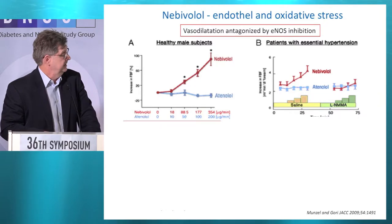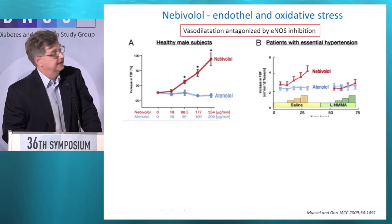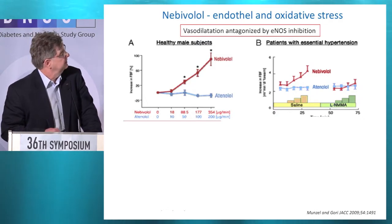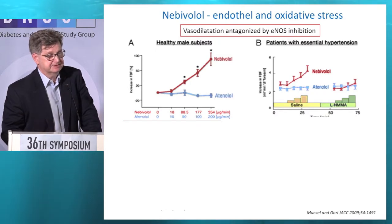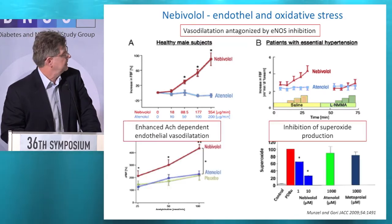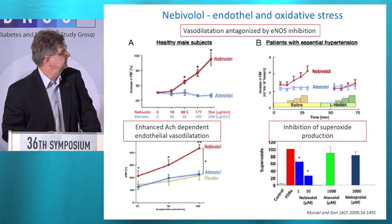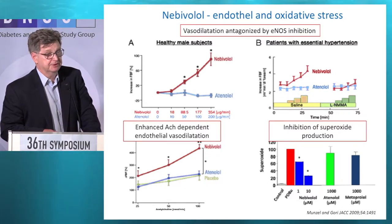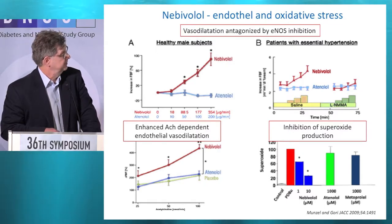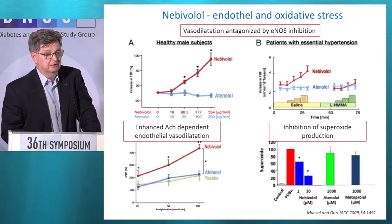Is there evidence? Yes. Data in healthy male subjects and in patients with primary hypertension show a significant difference between nebivolol and atenolol in vasodilatation. In patients with hypertension, nebivolol shows a further improvement, and when L-NMMA is added — meaning less NO can be produced — this effect is abolished. Furthermore, there is enhanced acetylcholine-dependent endothelial vasodilatation with nebivolol. Data also show that nebivolol inhibits superoxide production — reducing oxidative stress — in a dose-dependent manner, unlike atenolol and metoprolol.